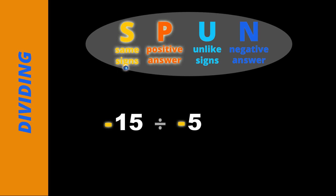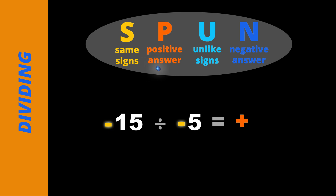What's negative 15 divided by negative 5? The signs are the same, so the answer is positive. 15 divided by 5 is 3, so negative 15 divided by negative 5 is positive 3.